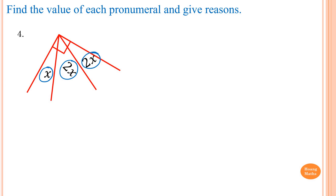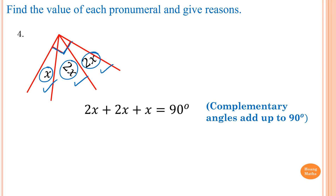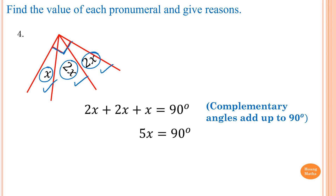Last question: 2x plus 2x plus 2x plus x is equal to 90 degrees. The reason is: complementary angles add up to 90 degrees. Collecting like terms: 2x plus 2x is 4x, plus another x is 5x. So 5x is equal to 90 degrees. Dividing both sides by 5: 90 divided by 5 is 18. Therefore, x is equal to 18 degrees.